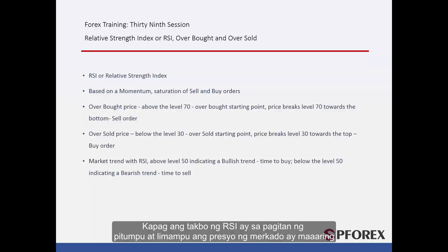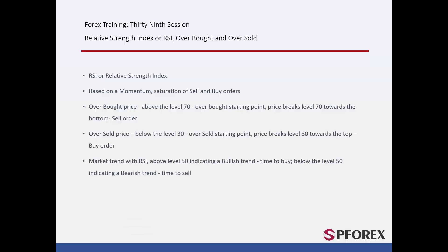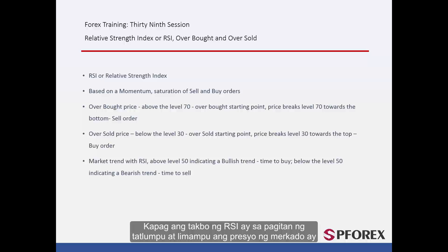When RSI trend is between 70 and 50, market price may have a rising direction and traders can place buy orders. When RSI trend is between 30 and 50, market price may decline and traders can place sell orders.